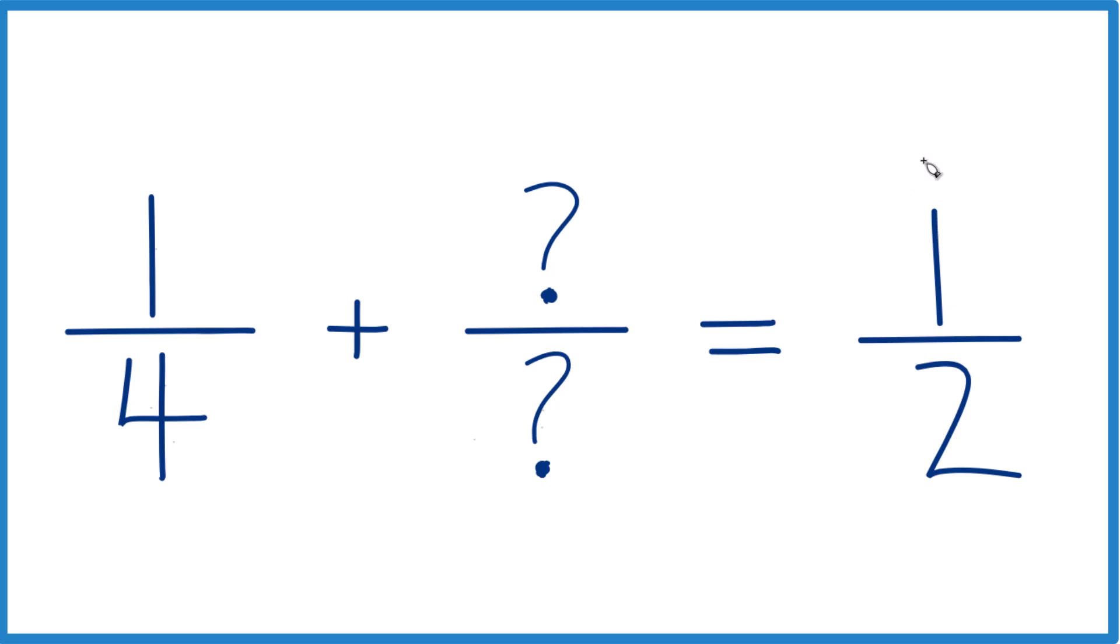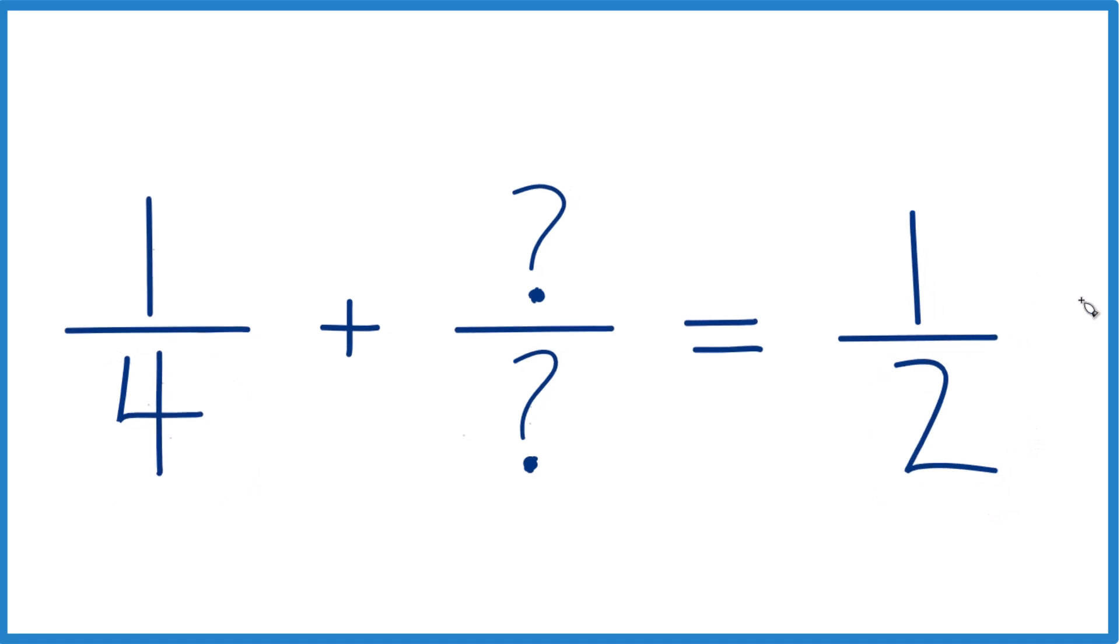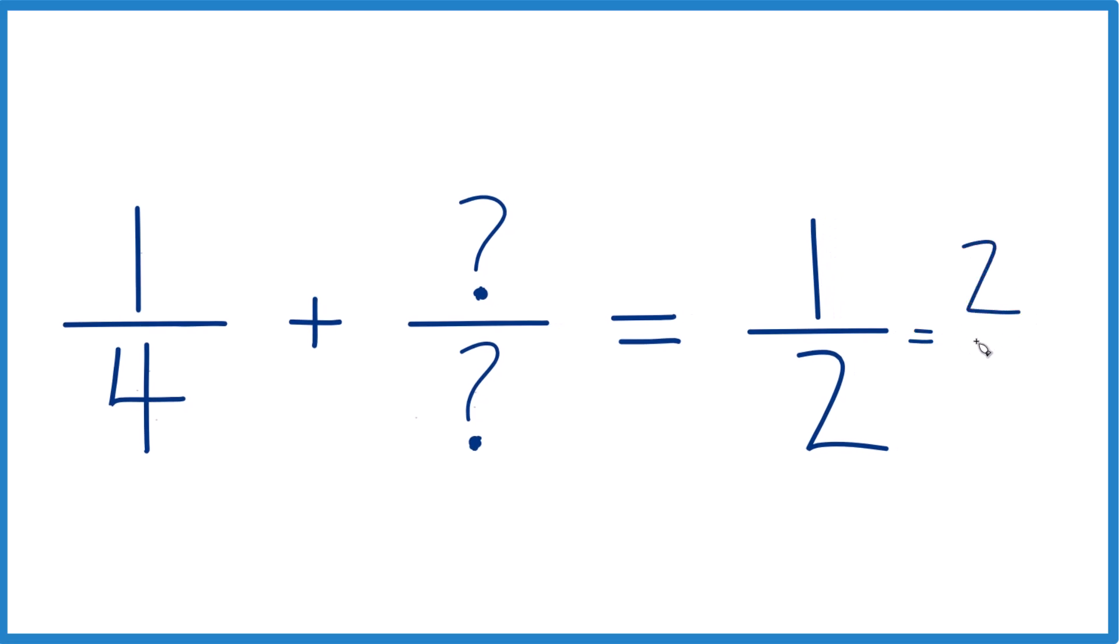I would try to get this to have the same denominator. Both of these have the same denominator, a common denominator. So I could just double this. One-half would become two-fourths. So I'm going to work with two-fourths.